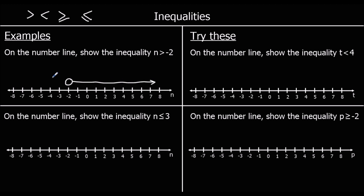So it can be anything bigger than negative 2 — so negative 1, 0, 1, 2, 3, and so on. The second example says on a number line, show the inequality: n is less than or equal to 3.